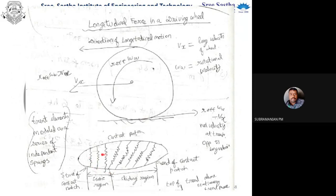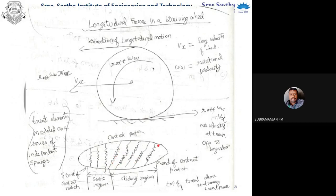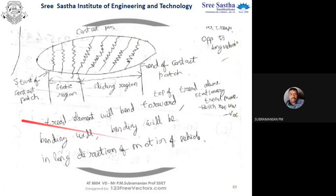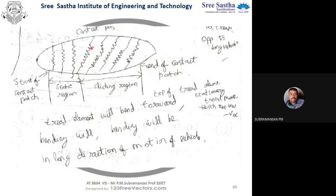In the sketch, vx represents longitudinal velocity and omega stands for rotational velocity. In the contact patch there are two regions: the static region and the sliding region. In the static region the springs will not be moving sideways, whereas in the sliding region the springs will get deflected. At the start of the contact patch we have the static region, and after that the sliding region. At the end of the contact patch the spring returns to the same position. In the sliding region, the thread element bends forward.